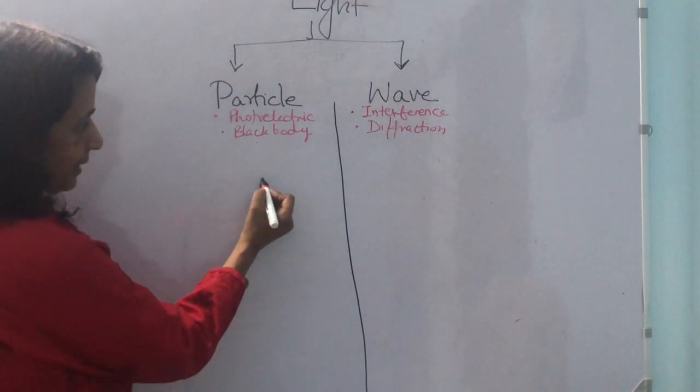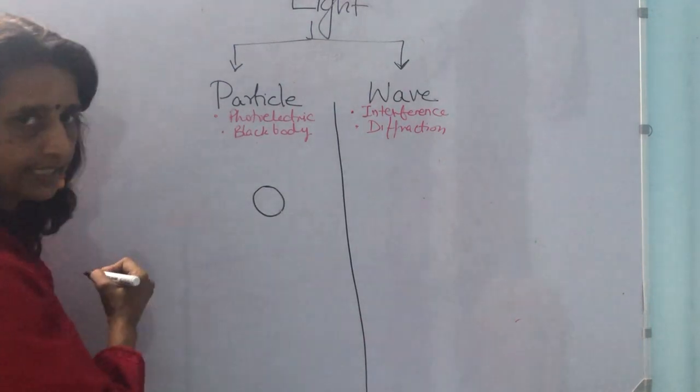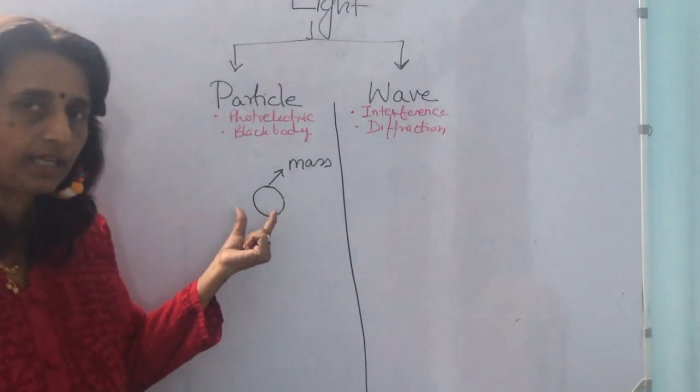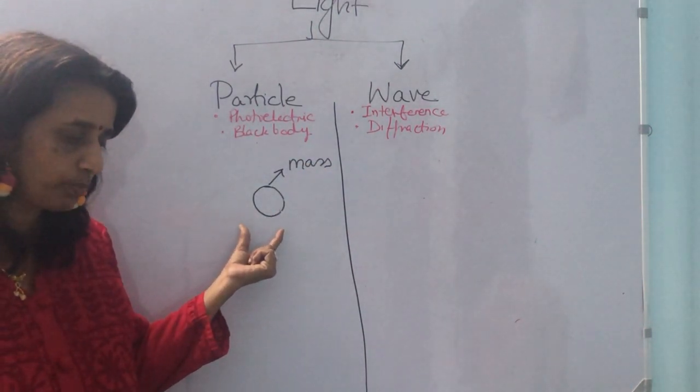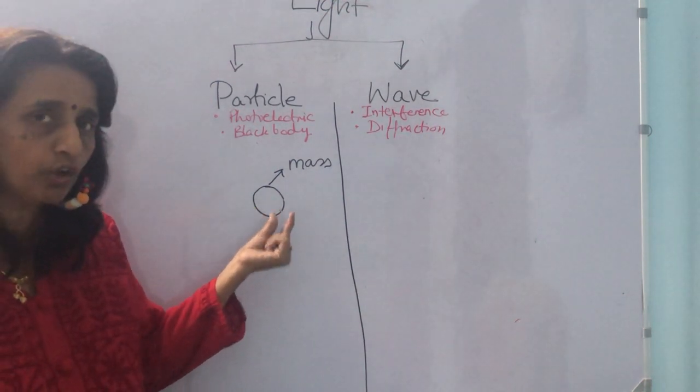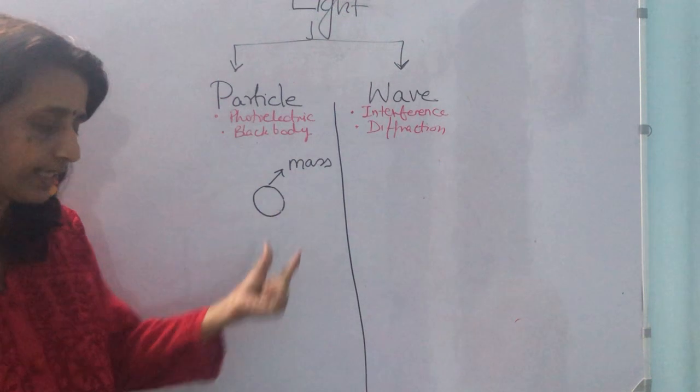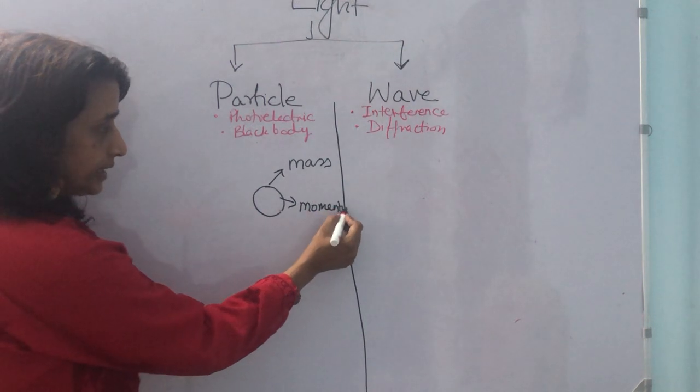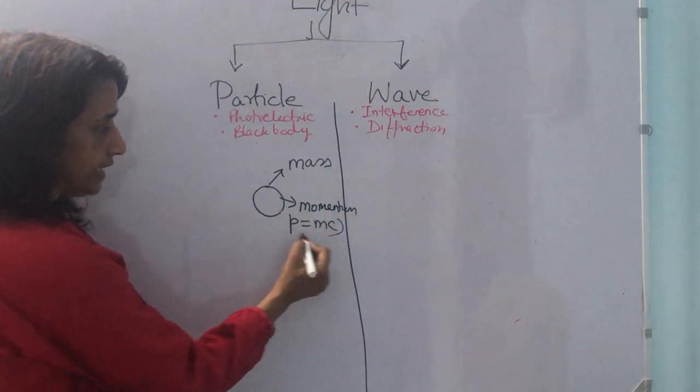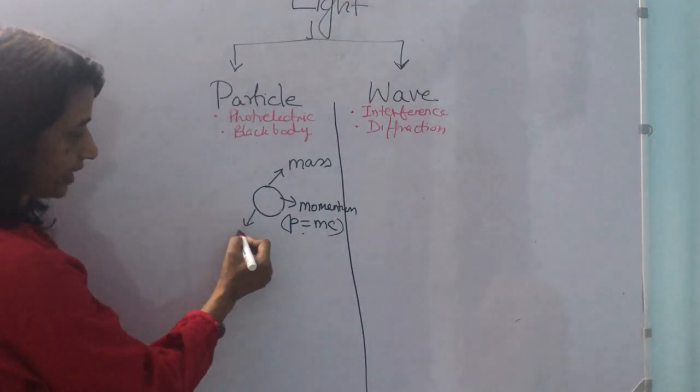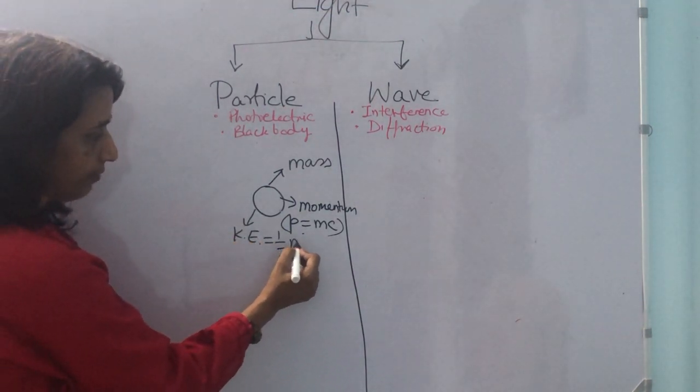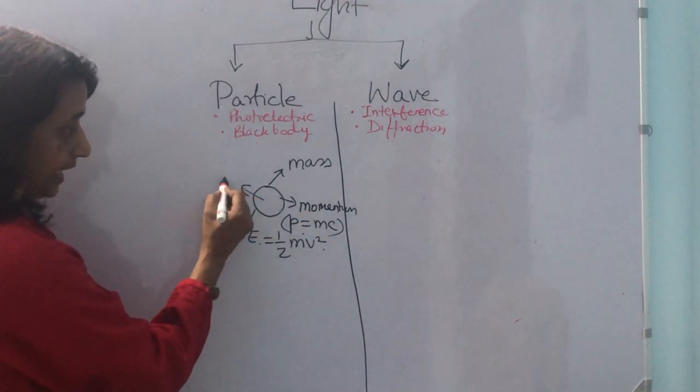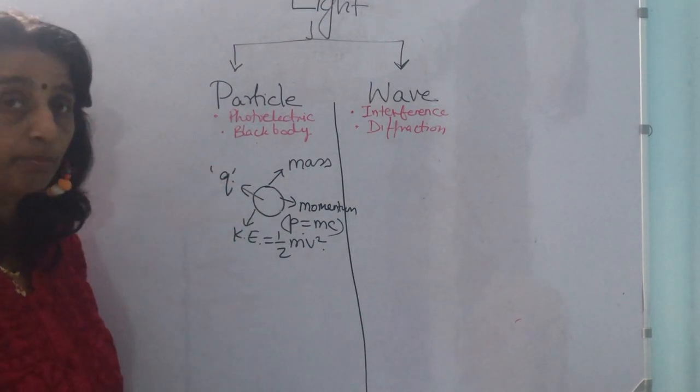A particle will be characterized by many things. First, mass. If a particle has occupied one definite position in space, it cannot be occupied by another particle. It will be characterized by distinct properties like mass, momentum, that is P equals mc, kinetic energy, KE equals half mv squared. Then you can have electric charge. Particle can have a charge also. Particle can have momentum also.